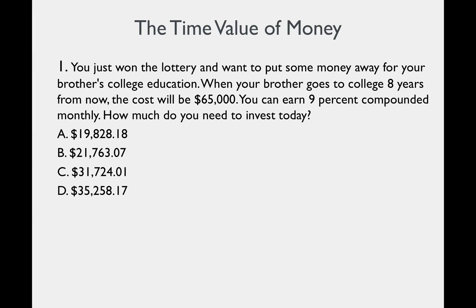In this problem, we know 3 out of 4 components: future value is $65,000, period is 8 years, and interest is 9% per year compounded monthly. We need to find the remaining component, which is the present value. Remember that we always have to translate the period unit into the unit that matches how the interest is compounded.